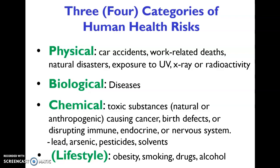The second category is biological, and that's the biggest category. About 75% of human health risks are biological, and it includes diseases — both infectious diseases and non-infectious diseases. A non-infectious disease is something that's not spread; it just happens to the body, like heart disease for example. Infectious disease is something that spreads from person to person or in any other way, and that is also a very large cause of biological human health risk.